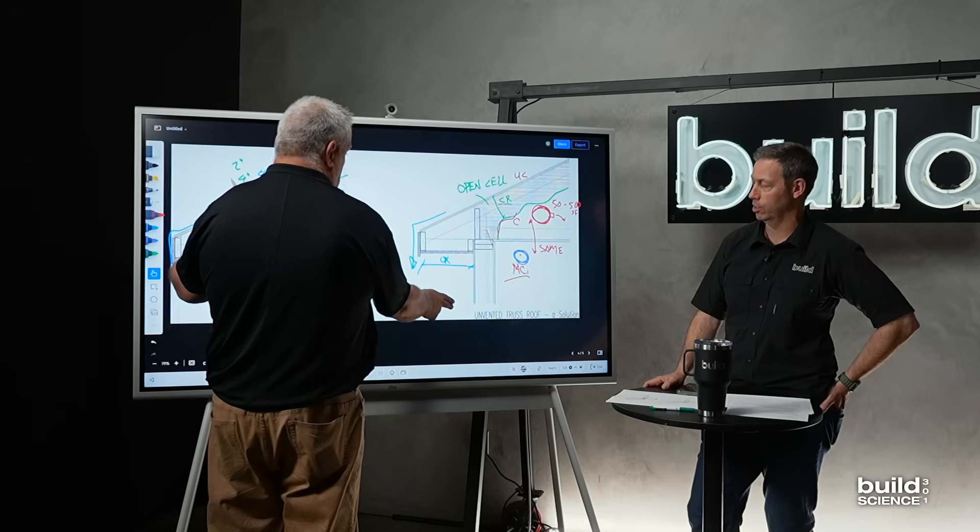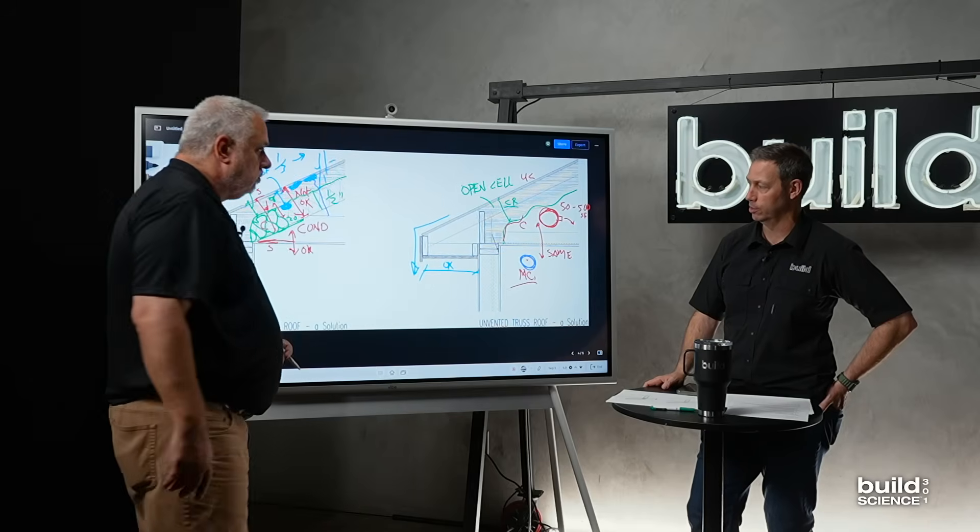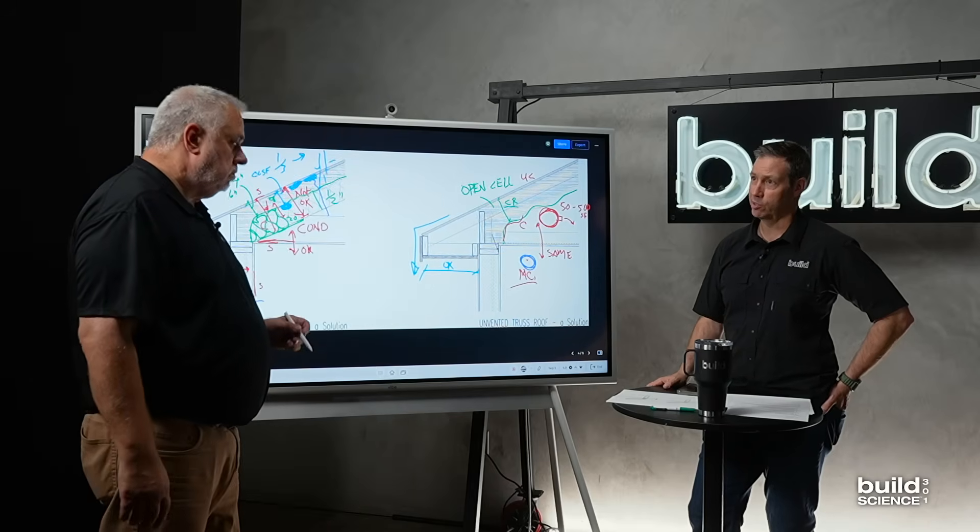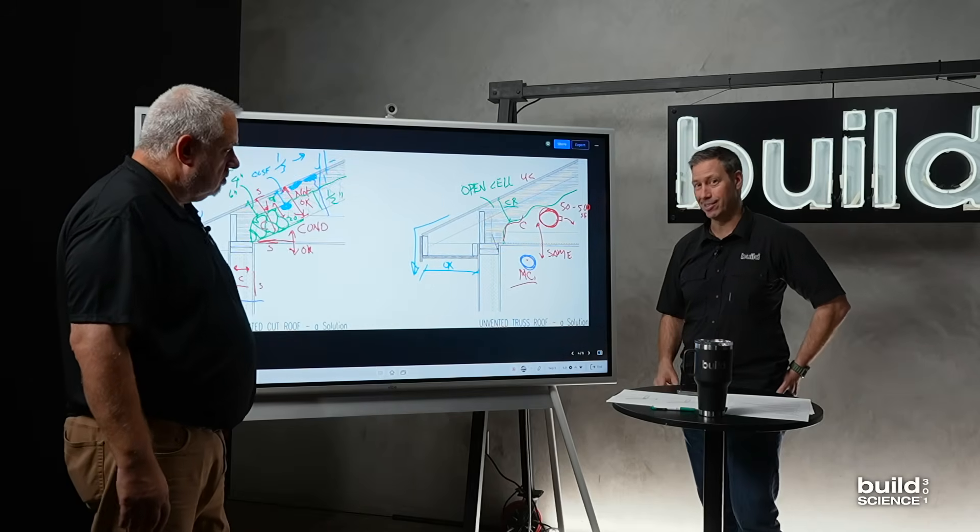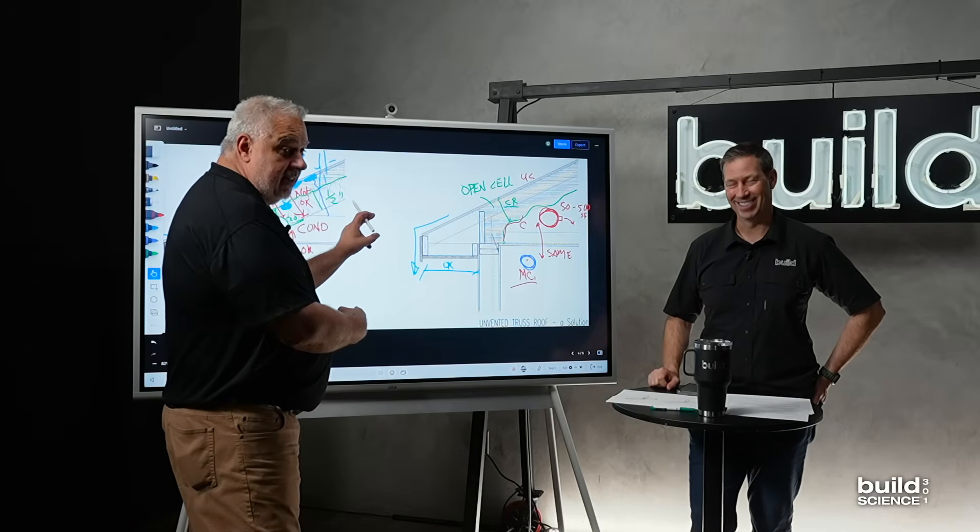I think we hit all the basics here. A lot to talk about, and we'll go into greater depth in future build science as we get into 401 and 501, but this is a really good understanding of what we're looking at for an unvented cut roof. That being said, like our friend Joe Stiebrick says, it's not rocket science. Build science.